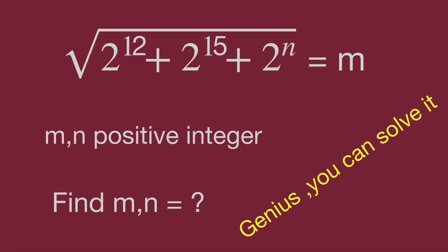Hello, you are watching Bala Hippo math genius riddle. The question is: square root of 2 to the power of 12 plus 2 to the power of 15 plus 2 to the power of n, equal to m. n is a positive integer. Find the value of m and n. Can you solve the problem? Pause the video and try on your side while you are ready. Keep watching the video to find the answer.